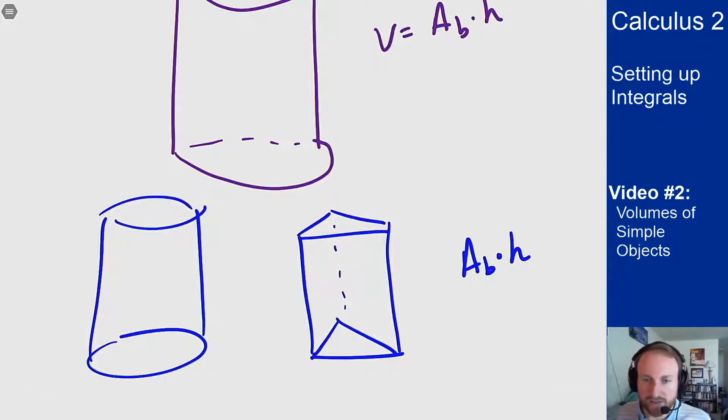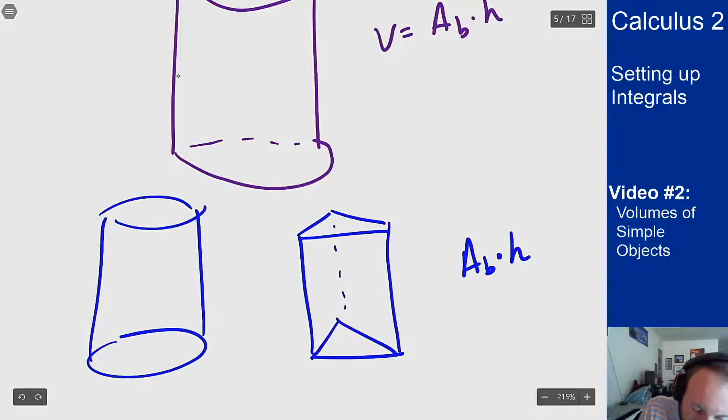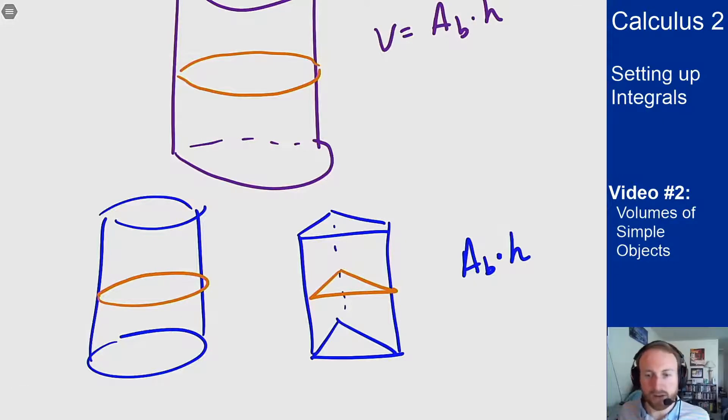But this fact here requires that the area of every single slice be the same as the area of the base, right? We see that here. If I take any slice here in the middle, it'll be the same shape and I'll get the same area. Same shape, same area. Same shape, same area. But what happens if that's not the case? What can I do if the area is not constant at every slice of my object?